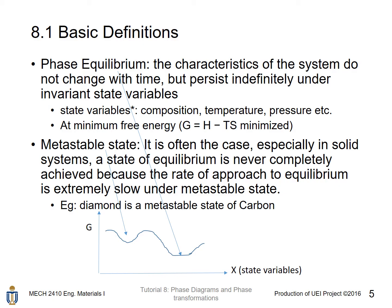G is the free energy. At minimum free energy, a system will attain its phase equilibrium. The X-axis represents various state variables, and one can vary those state variables to let the system attain its phase equilibrium.